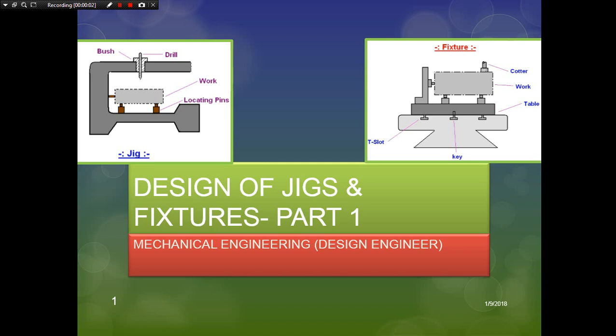Hello everyone, welcome to CAT tutorials for beginners. From today onwards we will start some sessions on jigs and fixtures. Basically, for all types of components to be manufactured in the machine shop, a number of holes, slots, etc. are available on the part. There are hundreds of components which contain at least one or more holes.